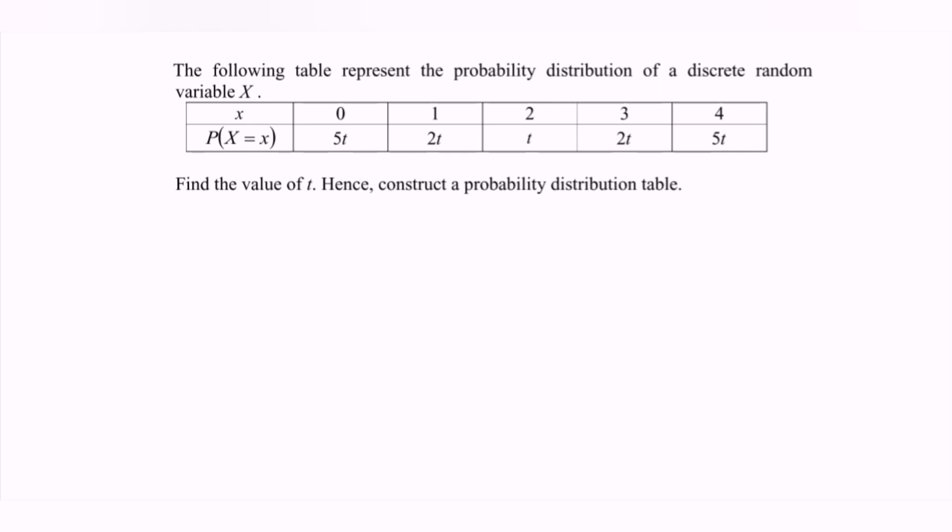So the first objective is find the value of t. By referring to the question, it mentions that it is a discrete random variable. So the basic concept for the discrete random variable is the summation for the probability of the discrete random variable will be equal to 1.